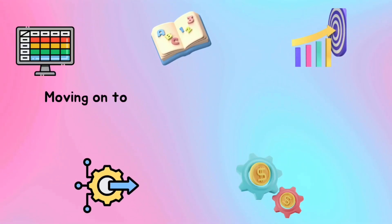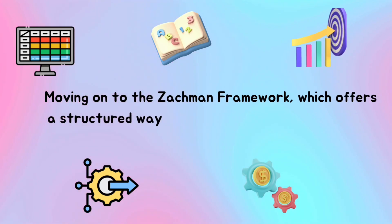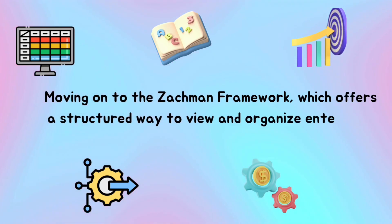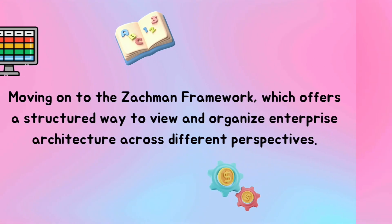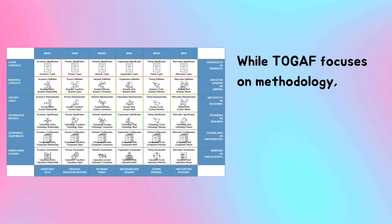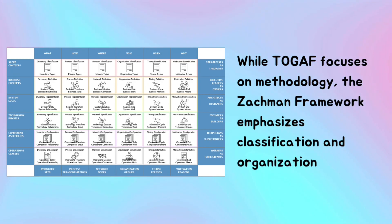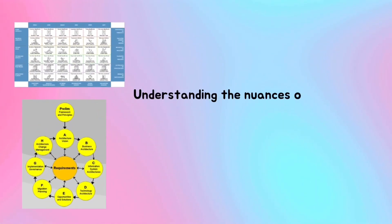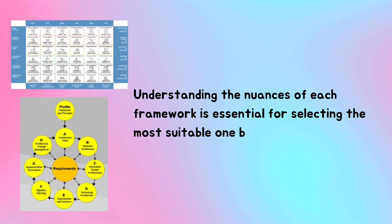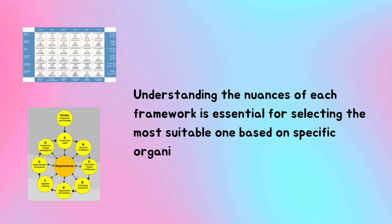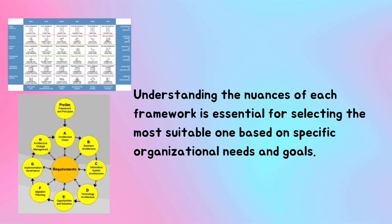Moving on to the ZACHMAN framework, which offers a structured way to view and organize enterprise architecture across different perspectives. While TOGAF focuses on methodology, the ZACHMAN framework emphasizes classification and organization. Understanding the nuances of each framework is essential for selecting the most suitable one based on specific organizational needs and goals.